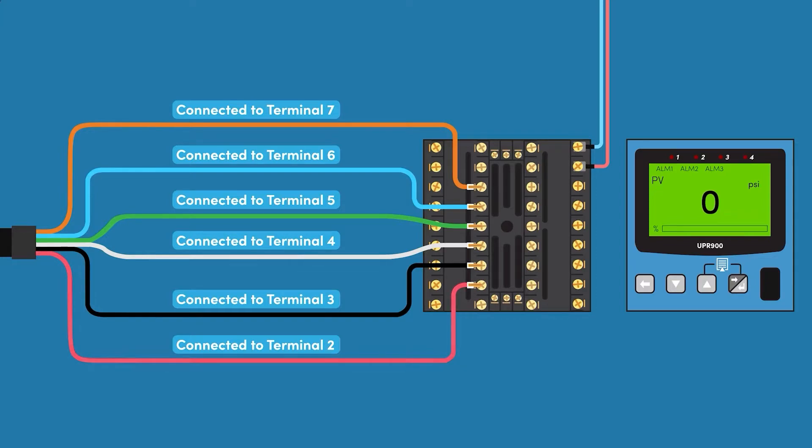Red wire on terminal 2. Black wire on terminal 3. White wire on terminal 4. Green wire on terminal 5. Blue wire on terminal 6. Orange wire on terminal 7.